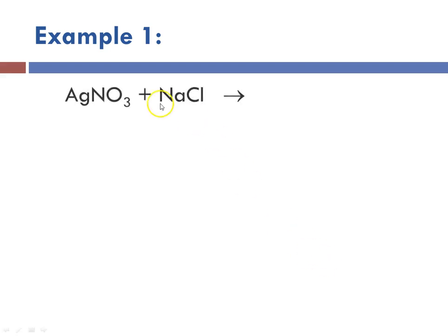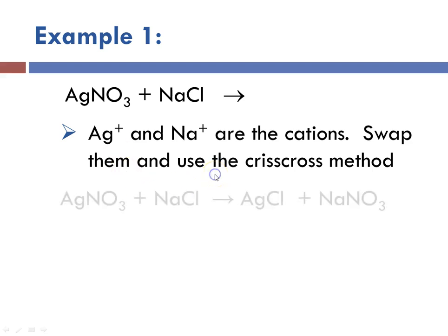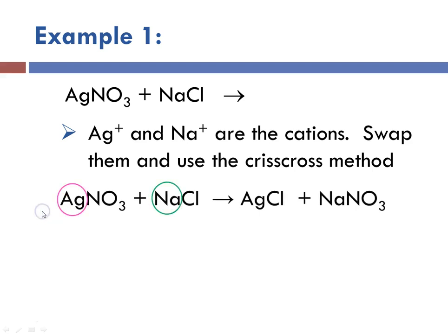Example one: the reaction of silver nitrate with sodium chloride. Silver and sodium are our cations, and we're going to swap them using the crisscross method. Silver and sodium are the cations; we're going to trade them, and then write the formulas that go with that — silver chloride and sodium nitrate.